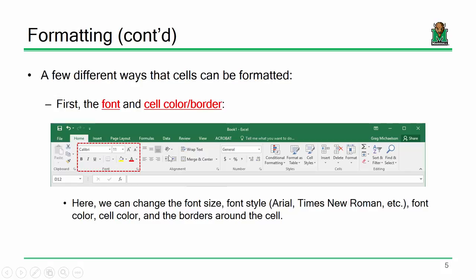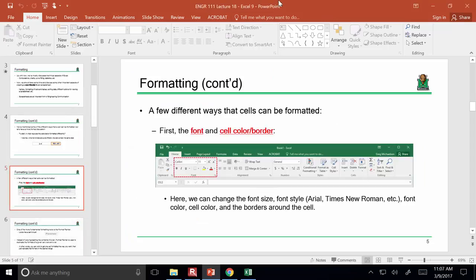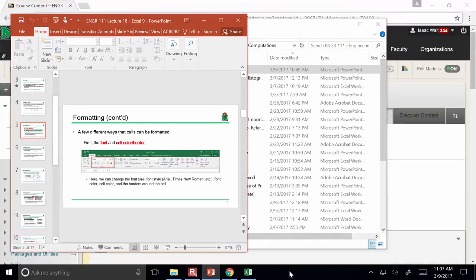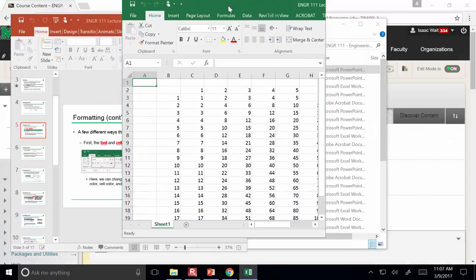One of the ways you've probably already used is the font size and font style area. You can fill in different colors to emphasize cells that need to be changed, and you can change the color of the text itself. With the file you've already downloaded, let's play around with that toolbar. Go ahead and turn your screen back on.